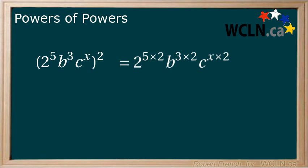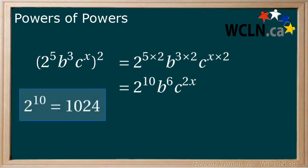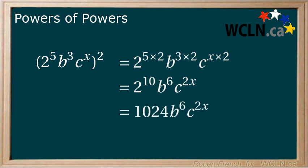Now that we have applied the 2 to each power, we can work it through to the next step by multiplying our powers together. Now we have two options. We can leave our answer here, or if we are being asked to simplify the answer, we can evaluate the 2 to the power of 10, which is 1024. And here you have the simplified form.